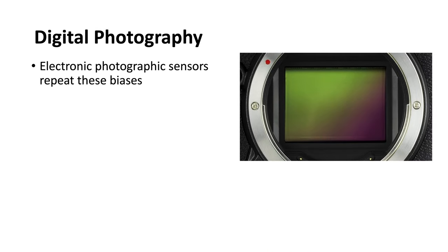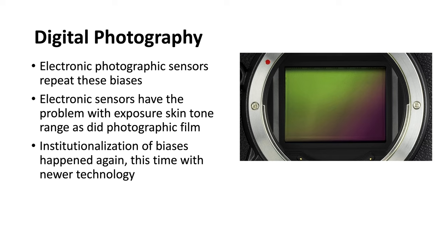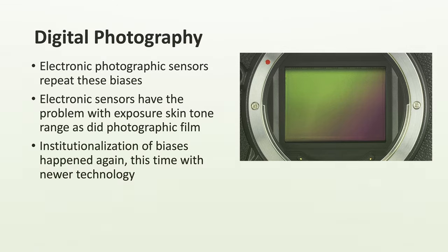As you can probably imagine, that bias carried into digital photography. The performance envelope of film was largely emulated by digital photography. This is an example of how a bias from one system can be carried over to another, repeating the problems of film but now with digital photography.